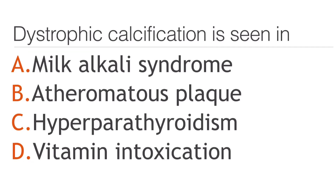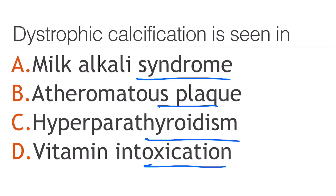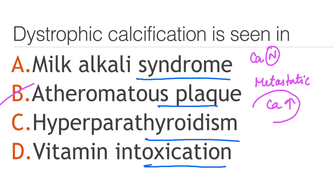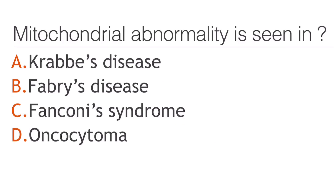Dystrophic calcification is seen in: milk-alkali syndrome, atheromatous plaque, hyperparathyroidism, or vitamin intoxication? The answer is atheromatous plaque. Remember that in dystrophic calcification the calcium levels are normal, whereas in metastatic calcification the cause is an increase in calcium levels.